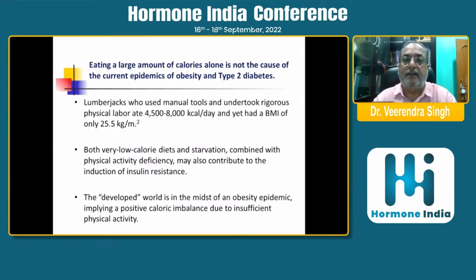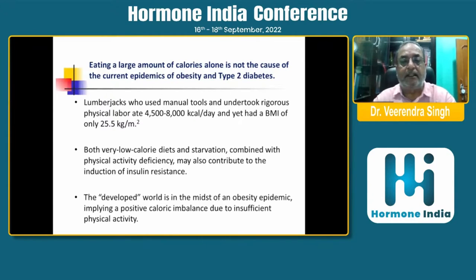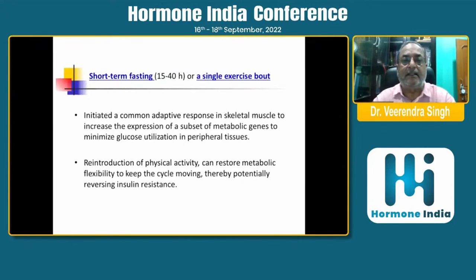Eating a large amount of calories alone is not the cause of the current epidemic of obesity and type 2 diabetes. Lumberjacks who used manual tools and undertook rigorous physical labor ate 4,500 to 8,000 kilocalories per day and yet had a BMI of only 25.5. Both very low-calorie diets and starvation combined with physical activity deficiency may also contribute to the induction of insulin resistance. Short-term fasting of just 15 to 40 hours or a single exercise bout can initiate a common adaptive response in skeletal muscles to increase the expression of a subset of metabolic genes. Reintroduction of physical activity can restore metabolic flexibility, thereby potentially reversing insulin resistance.